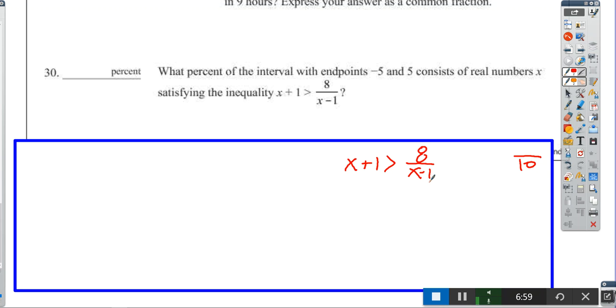Let's start with the inequality. We have X + 1 is greater than 8 over X - 1. Let's get all the X's in one place. I'm going to multiply everything by X - 1, which leaves me with X squared minus 1, because this is a difference of squares. These cancel out and we get 8. To solve a quadratic, it has to equal zero in factor form. Subtract 8, and I get X squared minus 9 is greater than 0. Let's factor this: X + 3 times X - 3 is greater than 0.